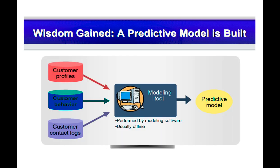You have multiple types of data in your organization and you want to gain wisdom from this data by creating models. The software we're going to use is called RapidMiner. It will model the profiles of customers, give me decisions, and provide business rules that help me gain a competitive advantage against other companies. So what types of data do you have? The customer profile is one.